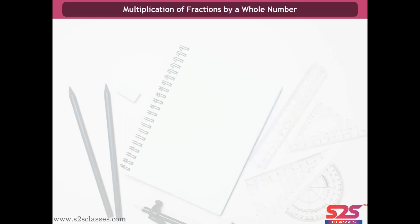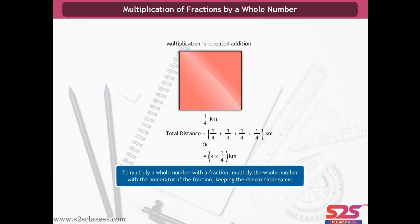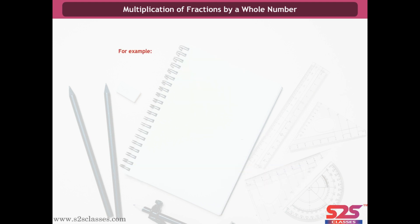Multiplication of fractions by a whole number. Multiplication is repeated addition. Suppose we need to find the perimeter of a square field each of whose side is 1/4 km. The total distance is 1/4 + 1/4 + 1/4 + 1/4, which can also be written as 4 × 1/4. To multiply a whole number with a fraction, multiply the whole number with the numerator, keeping the denominator the same. For example, 2 × 3/5 = 6/5; 8 × 7/4 = 14; 4/9 × 5 = 20/9.